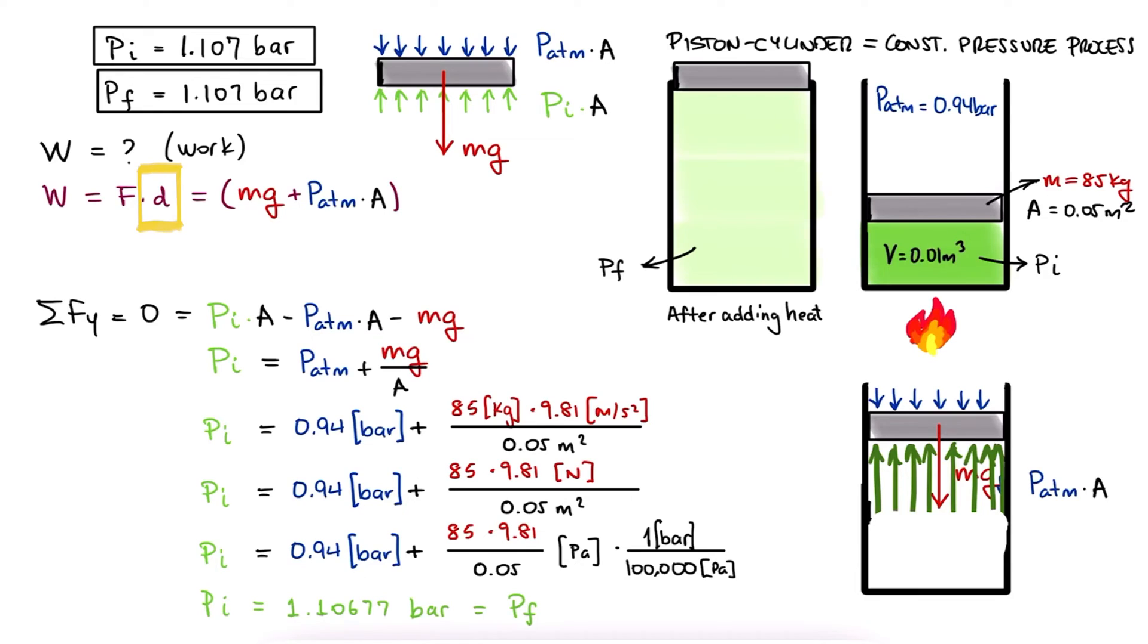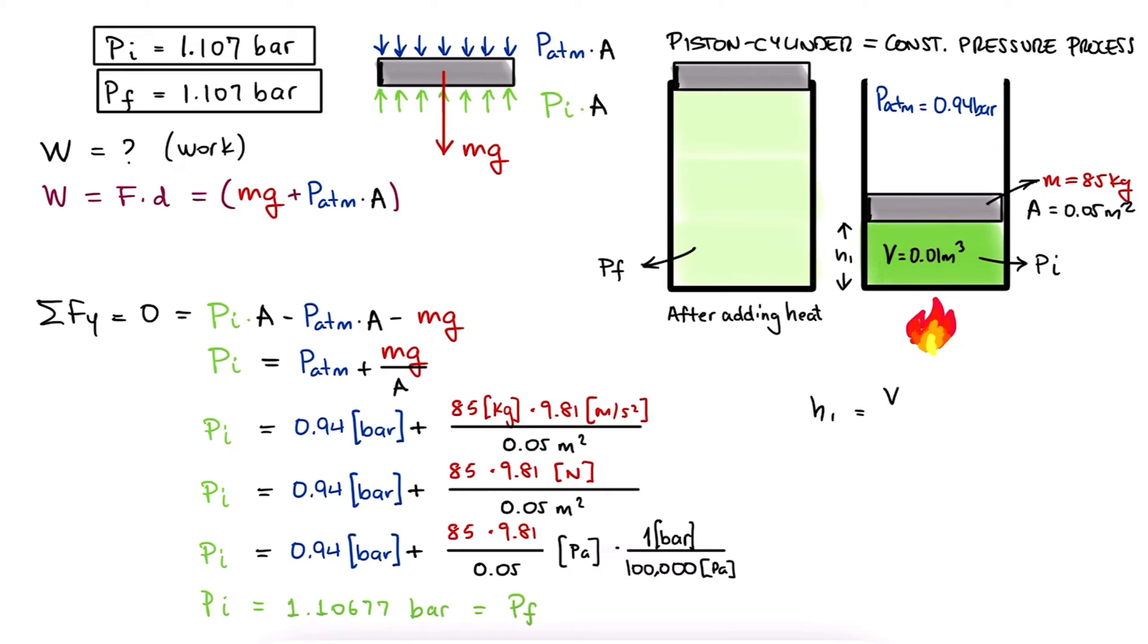If the volume was originally 0.01 meters cubed, and the area is 0.05 meters squared, it means that the original height of the gas's volume and therefore the position of the piston was 0.2 meters. If the volume tripled, the height itself tripled, since the area remained constant.